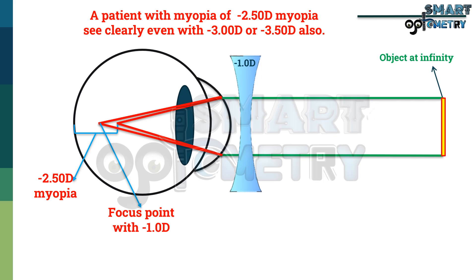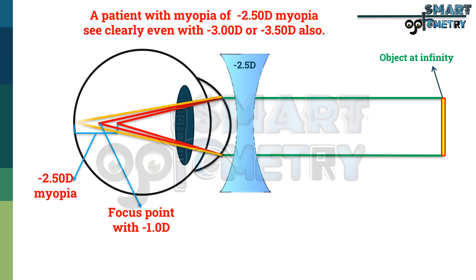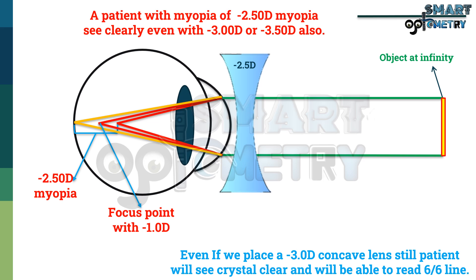If we place a -2.5 diopter concave lens at the spectacle plane, the rays will focus on the retina and the patient will see crystal clear and will be able to read the 6/6 line. Now, if we place a -3 diopter concave lens, still the patient will see crystal clear and will be able to read the 6/6 line.